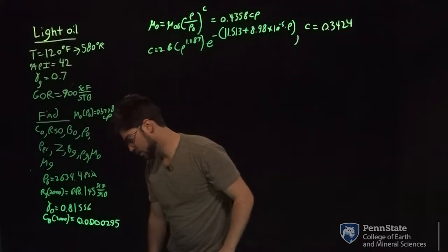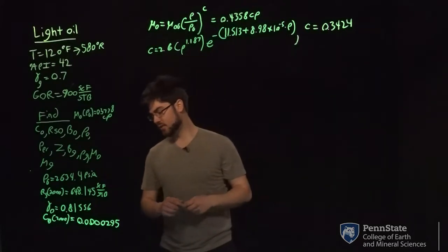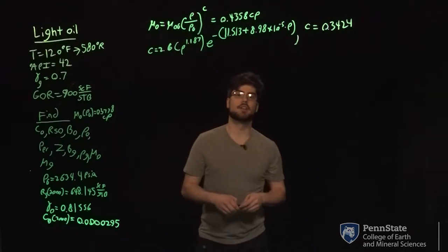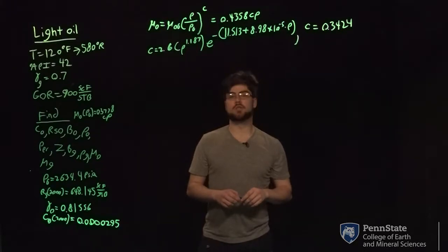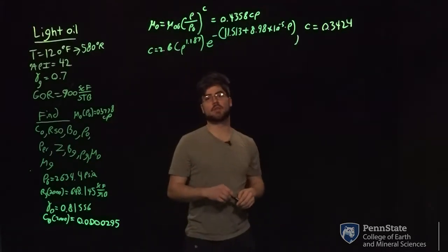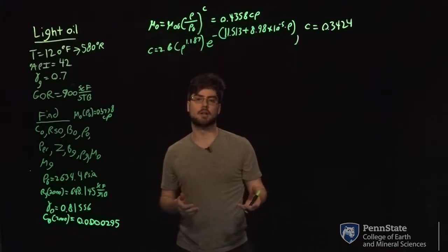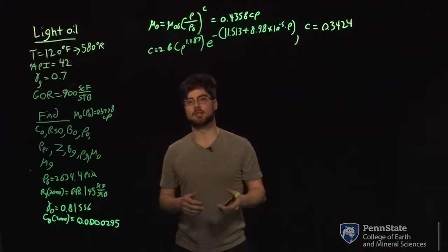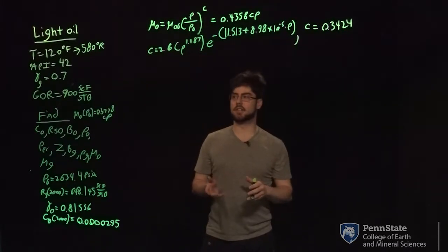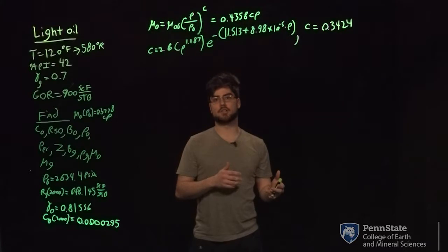The first thing we'll do is find our compressibility factor, also known as Z-factor. First you need to find the critical pressure and critical temperature of the fluid using your specific gravity of gas, via equations 3.60 and 3.61. Once you find PPC and TPC — your critical pressure and critical temperature of the gas — you find pseudo-reduced temperature and pseudo-reduced pressure, which is your pressure or temperature of interest divided by the critical pressure and critical temperature.